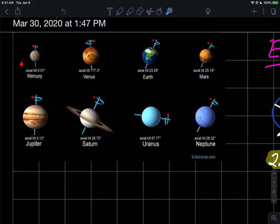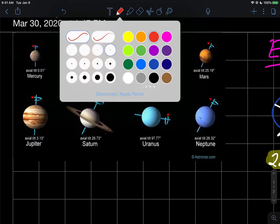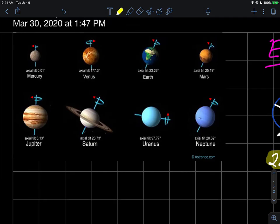So Mercury for whatever reason is actually not tilted very much, it's pretty much straight up and down. Venus looks like it's straight up and down but actually its axial tilt is at 177 degrees. So Venus is tilted so much that it's not even upright because remember upright might be something like this at zero degrees.